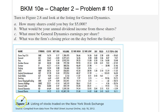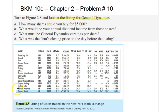We are given figure 2.8, which is just underneath the problem here, and we are to find the listing for General Dynamics, which happens to be just this stock over here. The whole row is for General Dynamics.